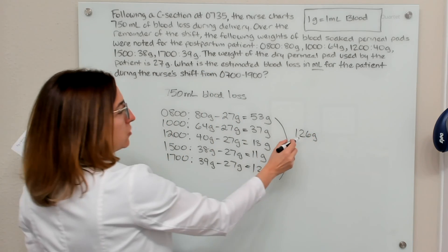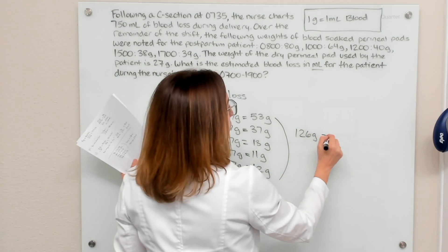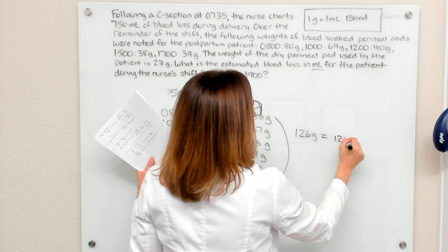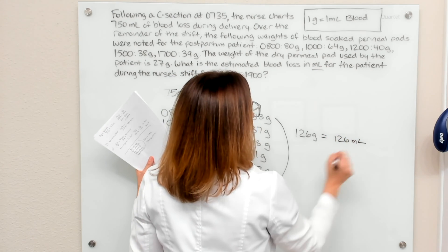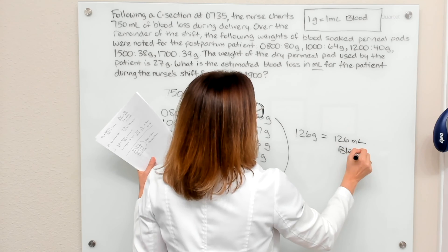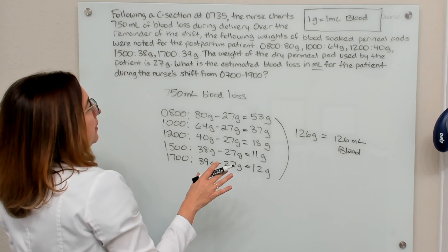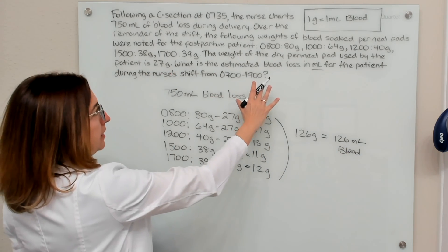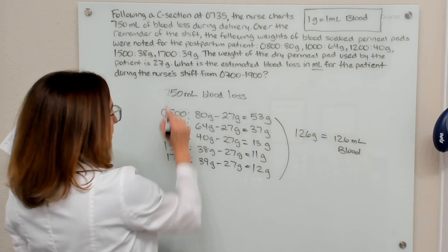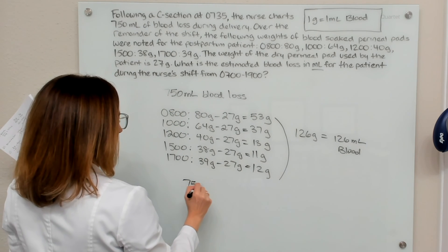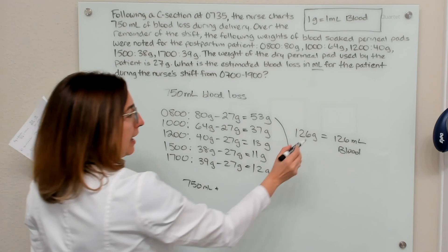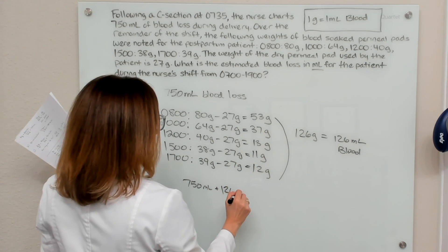And we know that 126 grams equals 126 milliliters of blood. So to calculate the total blood loss in milliliters, I need to take that 750 mLs and add in this 126 mLs.